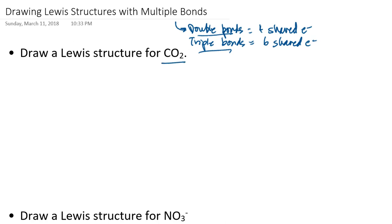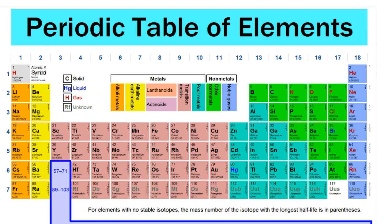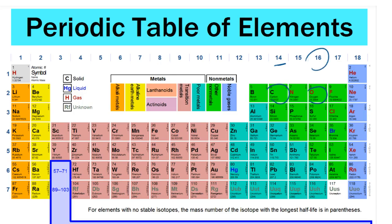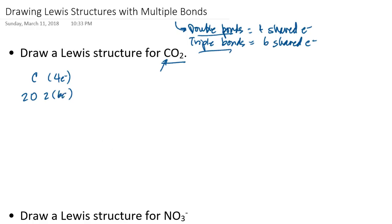Let's suppose that I want to draw the Lewis structure for carbon dioxide. The central atom should be the atom that has the fewest amount of atoms in the formula, so that would be carbon. If I take the formula apart, carbon would contribute four electrons since it's in group 14, and oxygen - there are two of them but each oxygen contributes six electrons since it's in group 16. If I add this up, I get 16 electrons total. Six times two is 12 plus 4, that's 16 electrons for this structure.